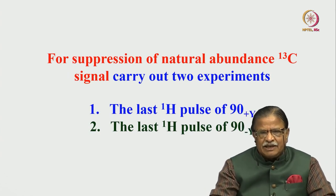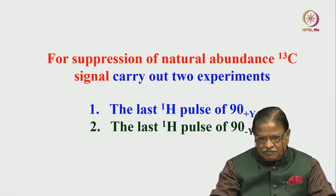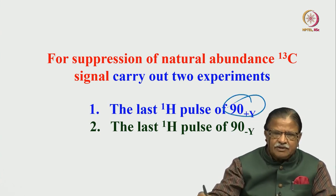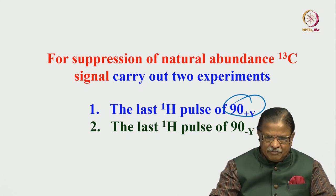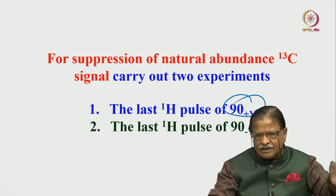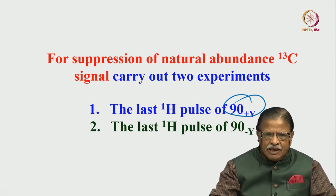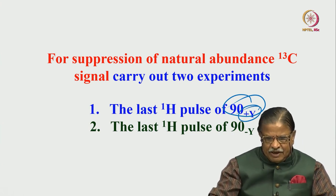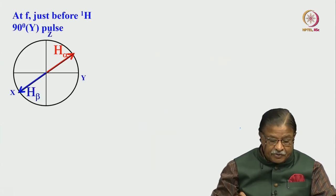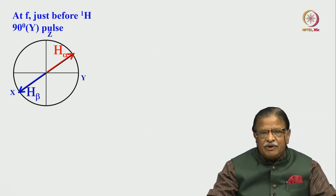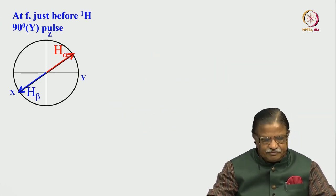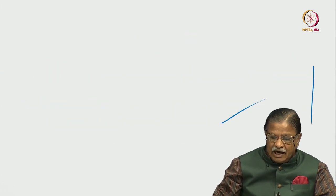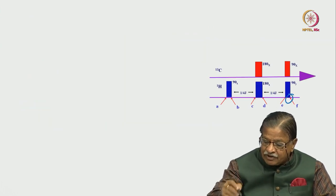For suppression of the natural abundance carbon-13 signal, we have to carry out two experiments. The last proton pulse — the detection pulse — is a 90 degree pulse for coherence transfer from proton to carbon. Once you do two experiments: the last proton pulse should be plus-y in one, and minus-y in the other. What happens when we do these two experiments? We will see how it works.